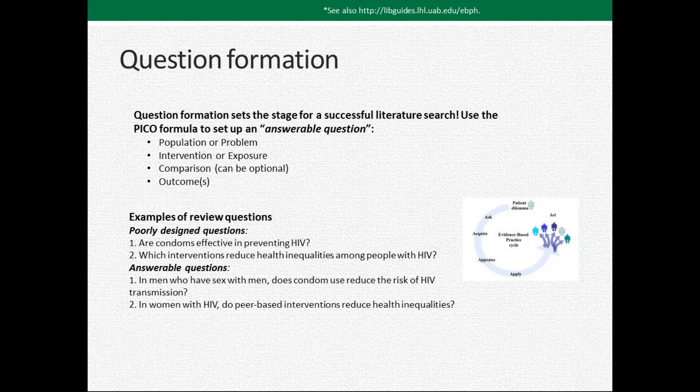There are some other examples of review questions. One that somebody might come to me with: they're looking for evidence of effectiveness of condoms in preventing HIV. I might say, how might you target that a little bit better? You might target the population — in men who have sex with men, does condom use reduce the risk of HIV transmission? It's a different way of asking it and setting it up to get more targeted results. It's just to prevent you from getting buried and having to go through a lot of stuff that you don't really have time to.